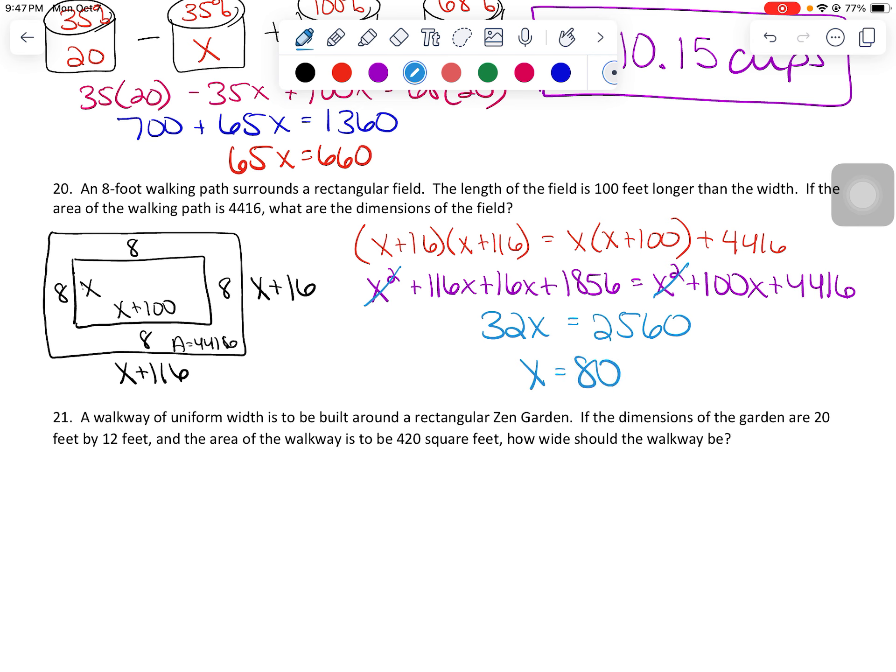Now, you're not done here because my question was, what are the dimensions of the field? So the field, that was my rectangular field, is this inside area here. So if X is 80, we've got 80 here, and then X plus 100, so 80 plus 100. So my final answer here should be 80 feet by 180 feet. Those are the dimensions. And that takes care of problem number 20.